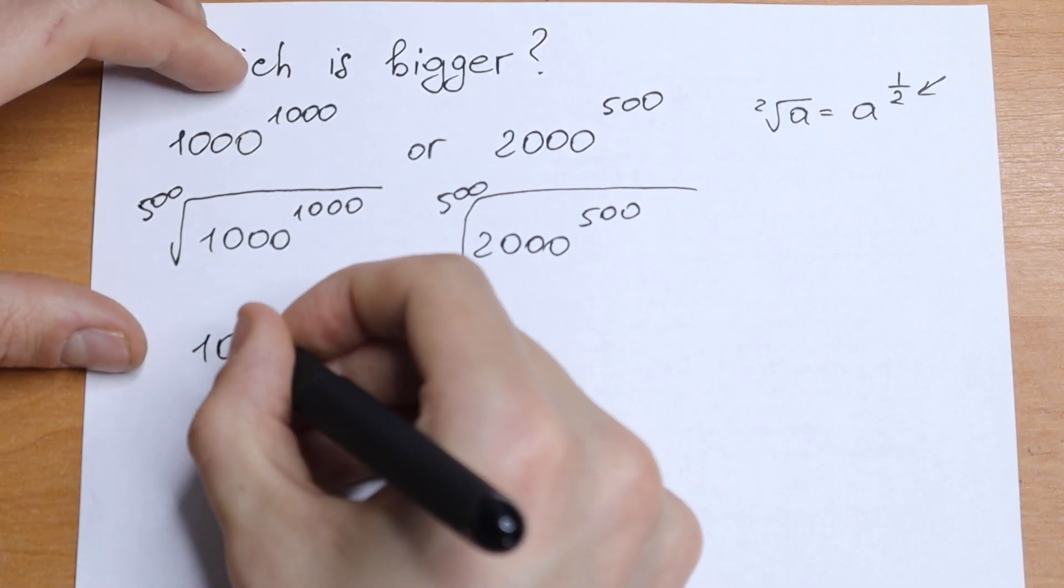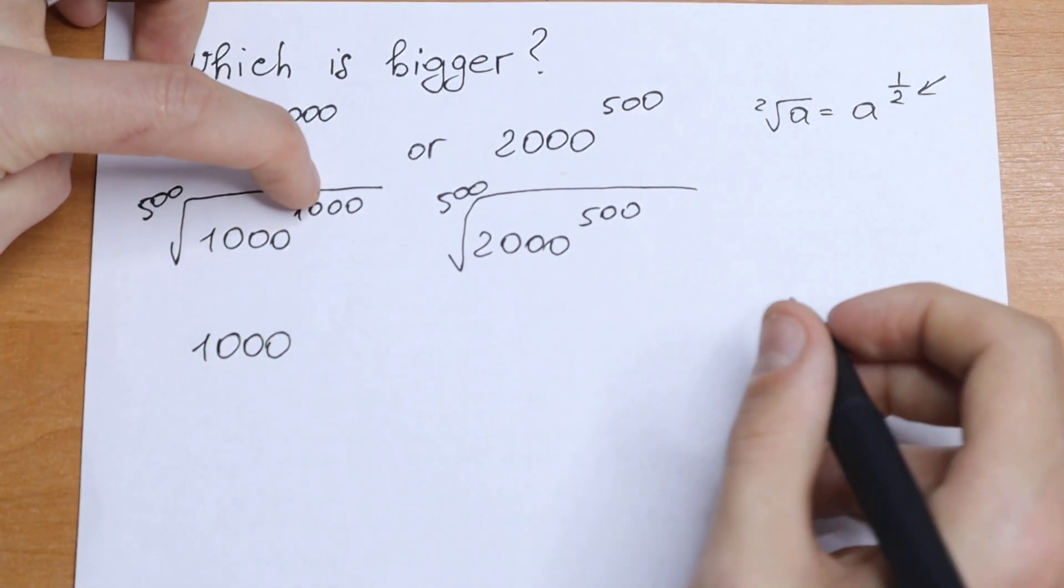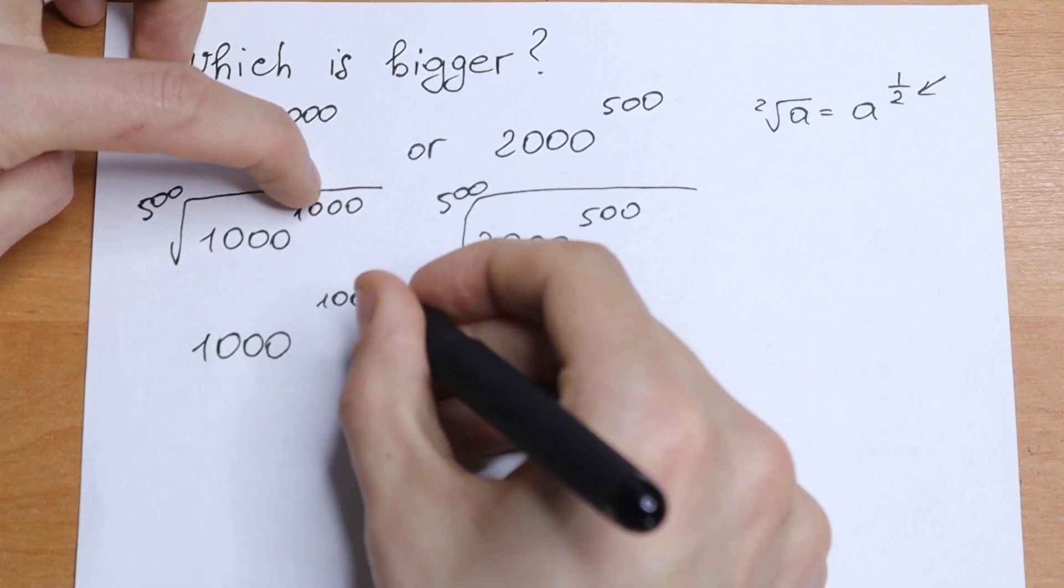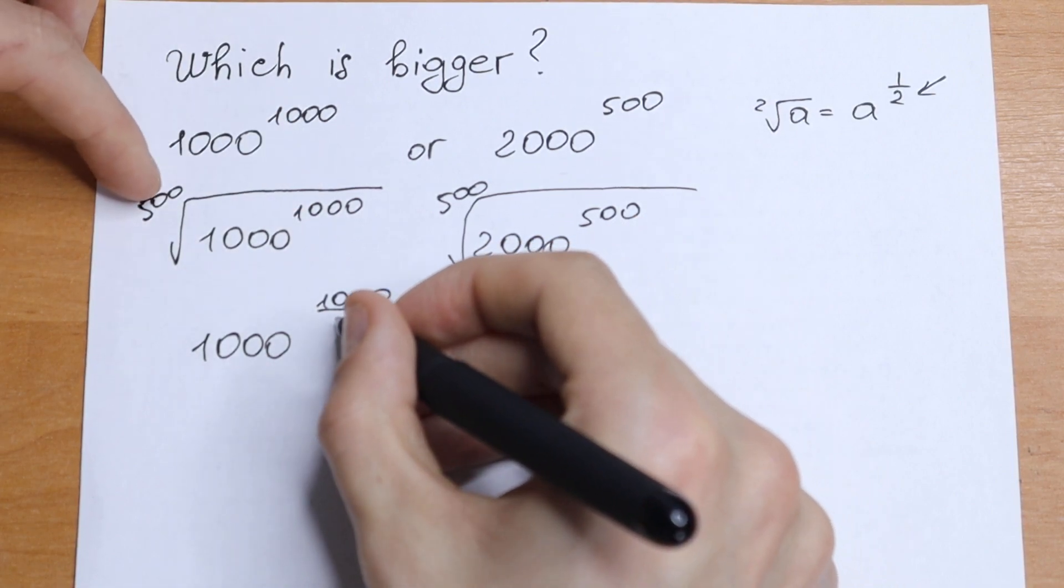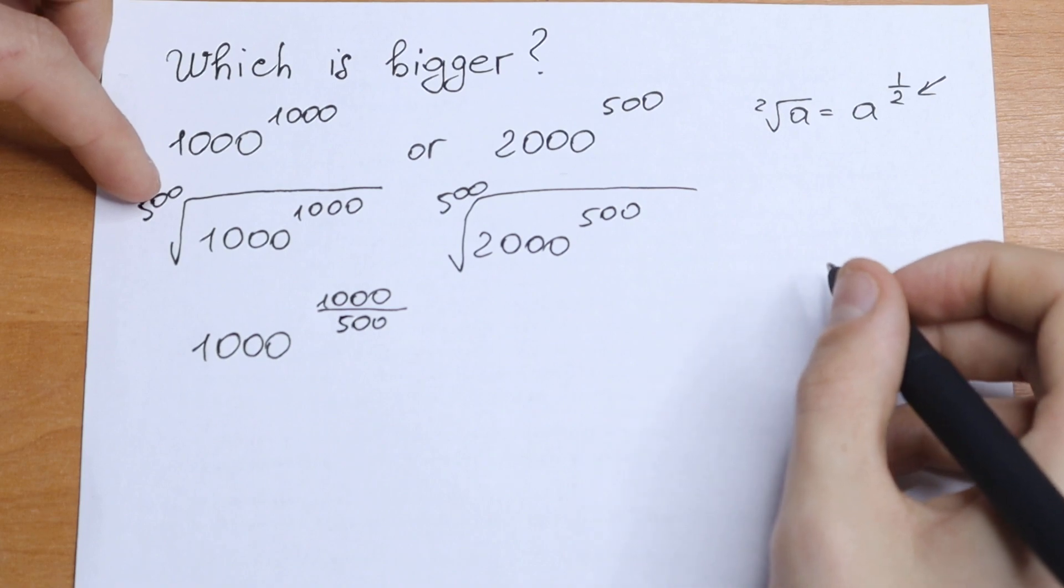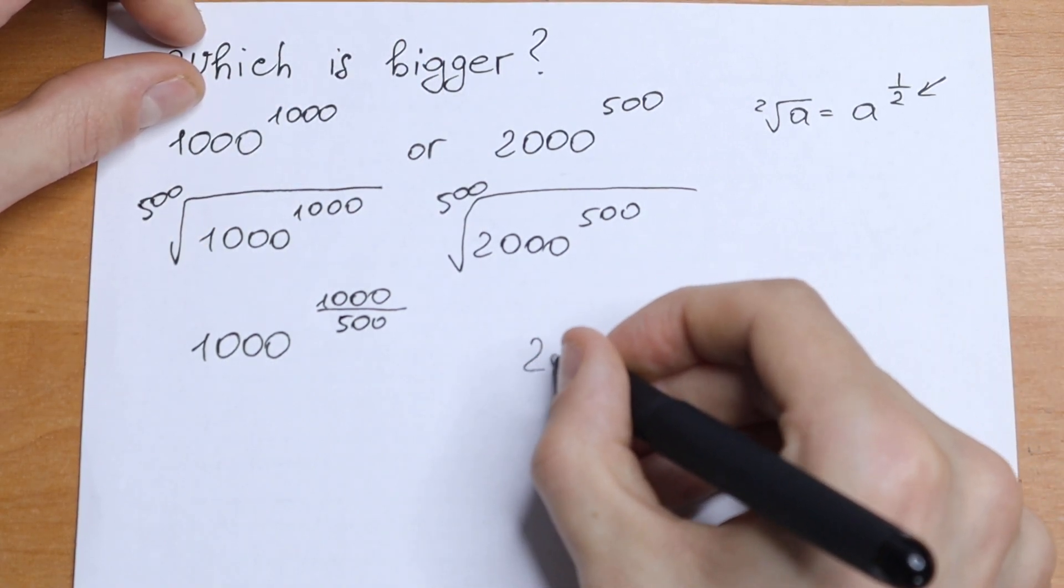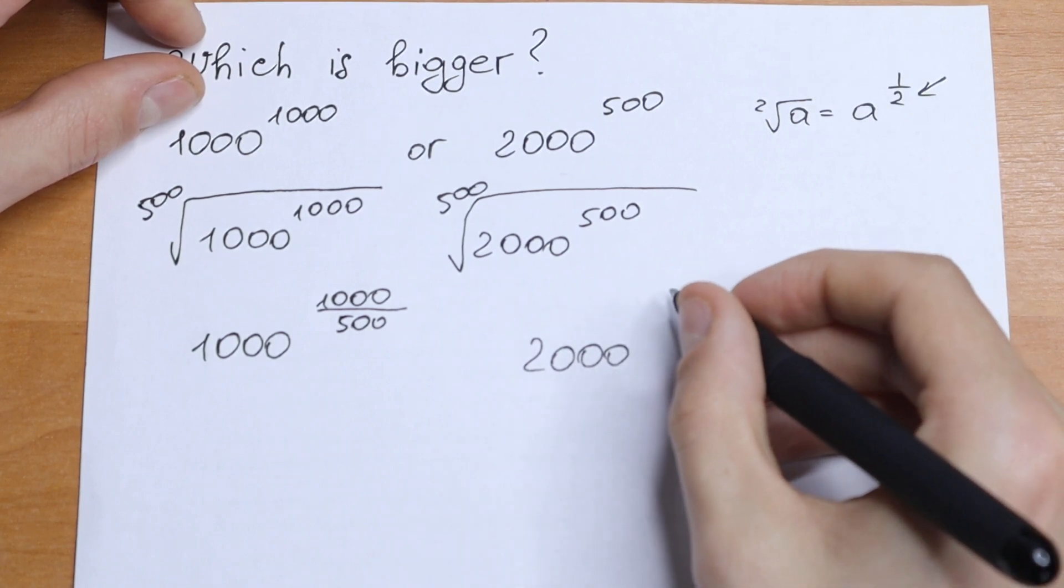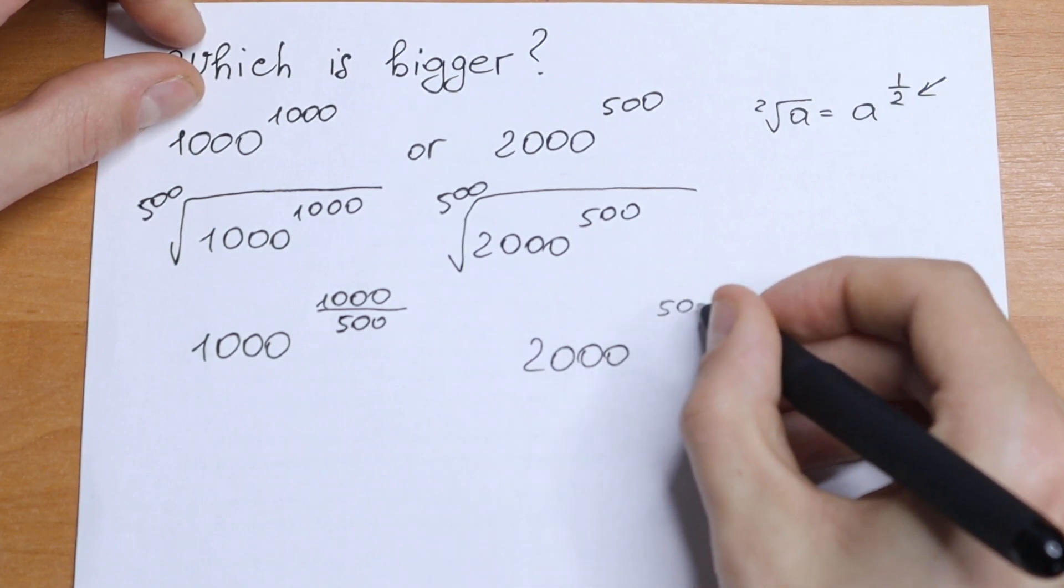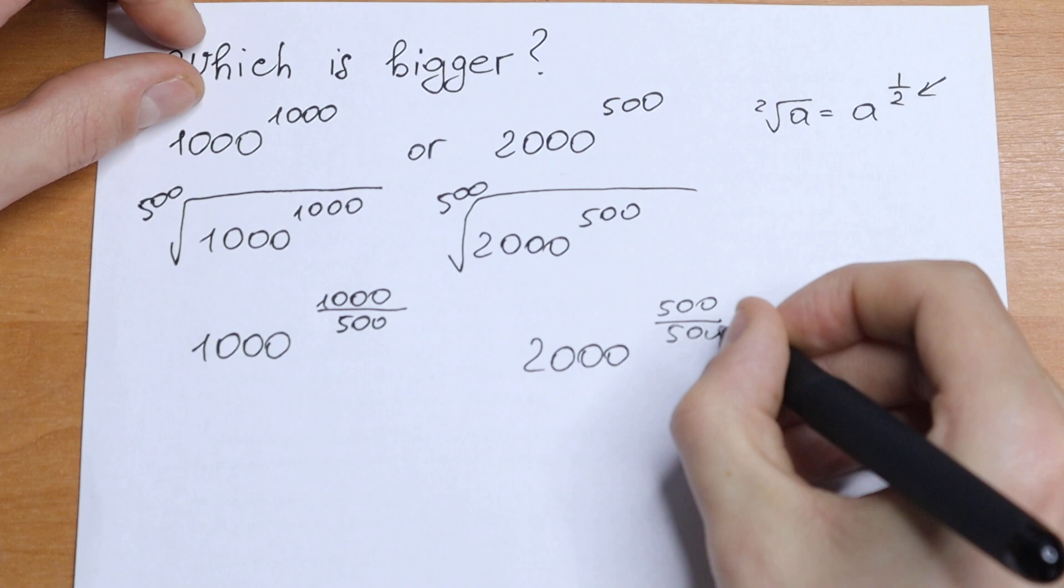And as you can see right here this 500 will be the denominator for our fraction. Take a look. We will have 1000 to the power of 1000 divided by this 500. And on the right we will have the same thing, 2000 to the power of 500 divided by 500.